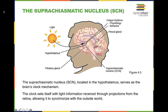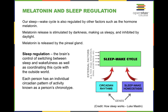The suprachiasmatic nucleus is very much near the hypothalamus, and they work together. Another part of what assists in regulating our sleep-wake cycle is the pituitary gland. One of the things that helps stimulate our sleep-wake cycle is, of course, light. Melatonin is something that is inhibited by light, so it's really difficult for melatonin to build up whenever we are blasted with light.